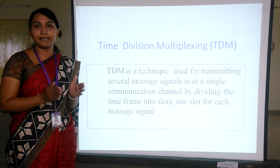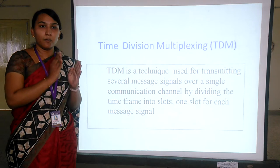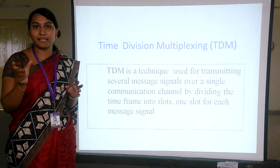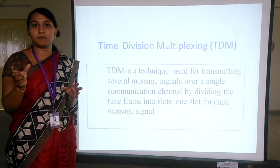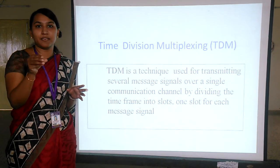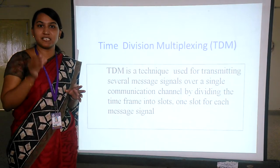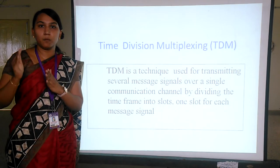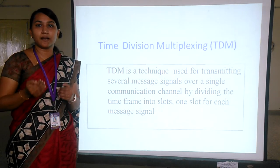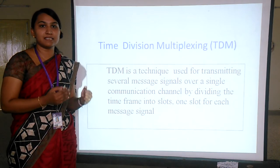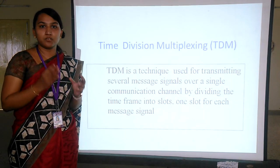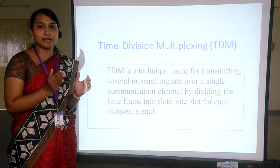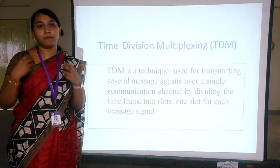These pulse amplitude modulated samples occupy only a fraction of the sampling interval Ts. Among the full Ts period, only a fraction of the time period is occupied by the samples. The key advantage of pulse amplitude modulation is conservation of time — this is an important feature of pulse amplitude modulation.